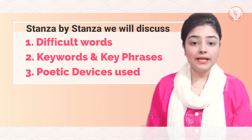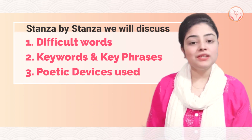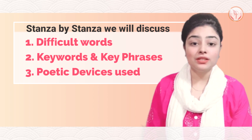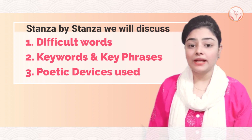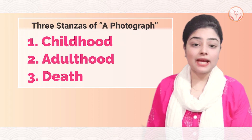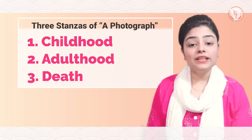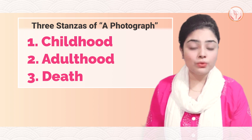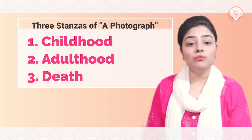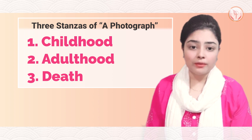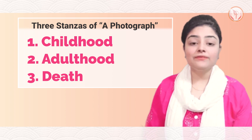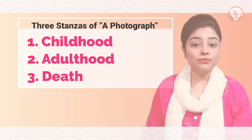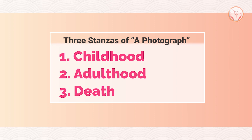Now we'll deeply analyze the poem, one stanza at a time. We'll discuss the difficult words and the key phrases used. The poem is divided into three stanzas, and the three stanzas represent the three phases of life — this is a very important exam question. The three stanzas depict three different phases: the first one is childhood, the second one is adulthood, and the third and last one is death.